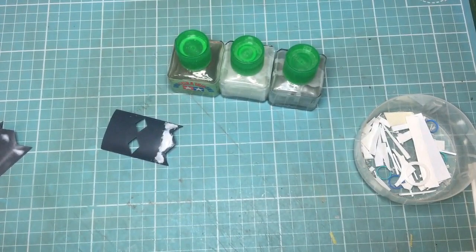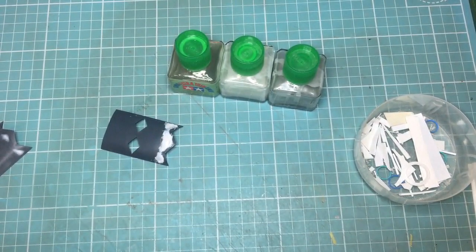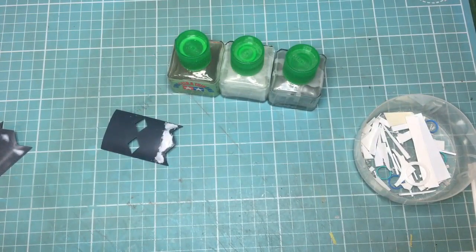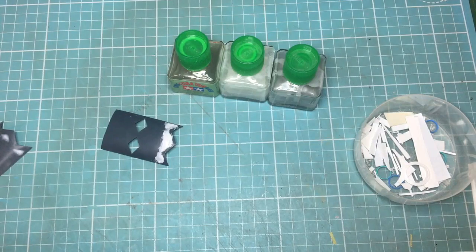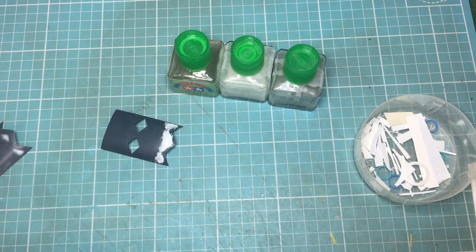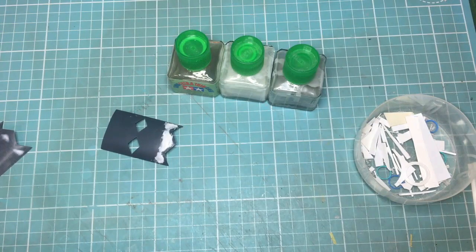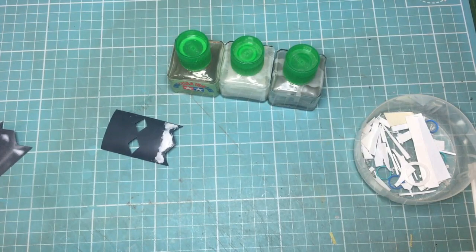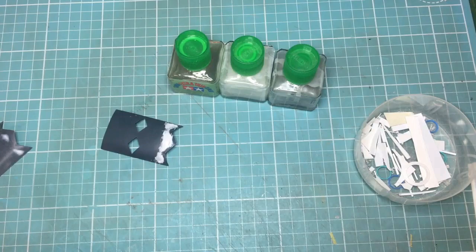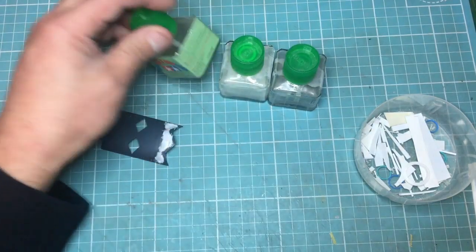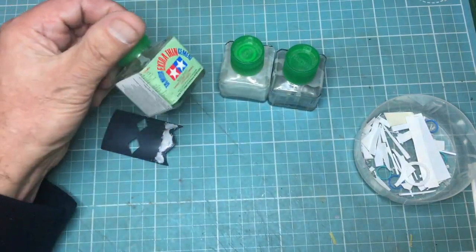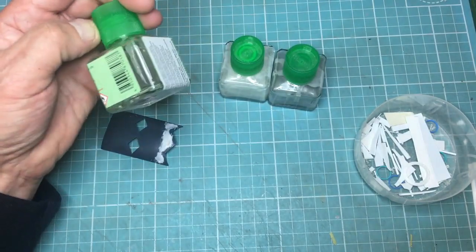Sprue goo is something I've been using for quite a few years, four, five, six years maybe. First heard about it many years ago from a guy called Peter Pools on large-scale planes, an American guy who builds model aircraft. He put me onto the idea of melting sprue into basically liquid cement, Tamiya extra thin.